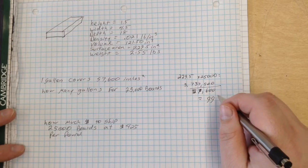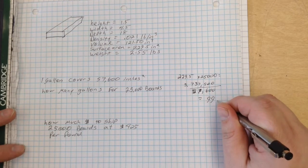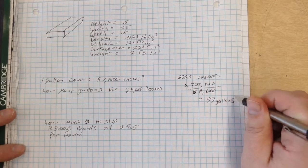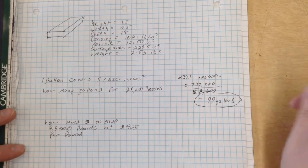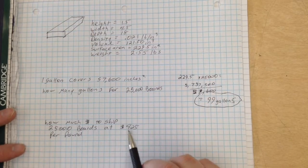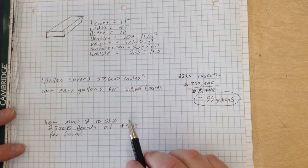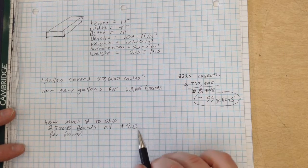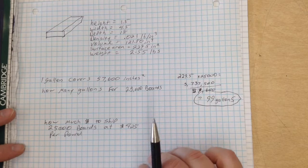It's actually 99 and some change, but we need to estimate how many gallons. So we are going to say we're going to need 99 gallons to paint 25,000 boards. Now the next question asks how much it's going to cost to ship 25,000 boards if it costs $4.25 per pound.